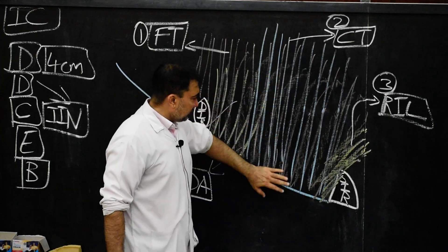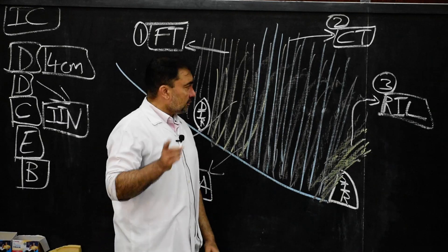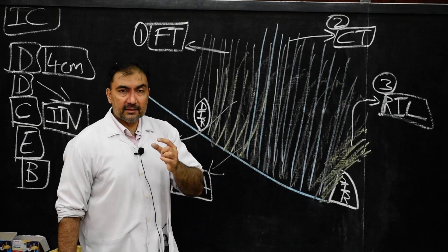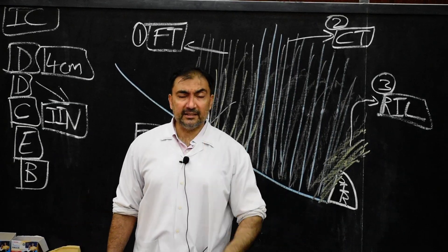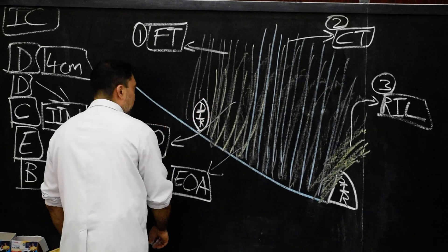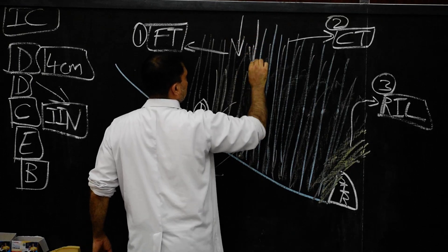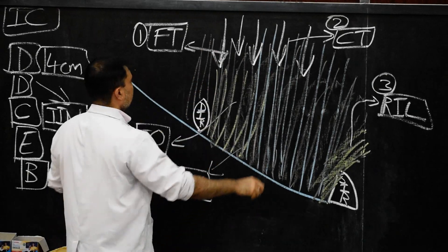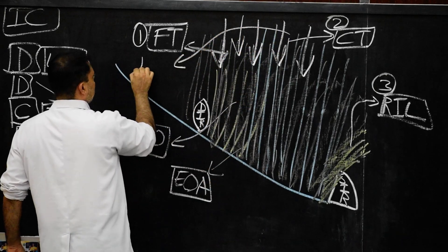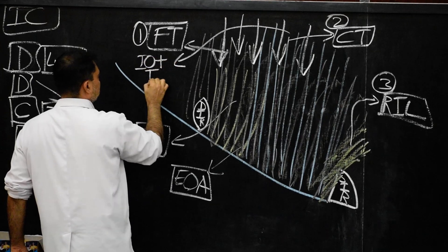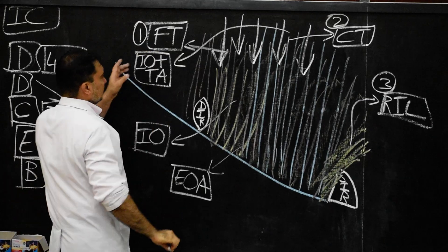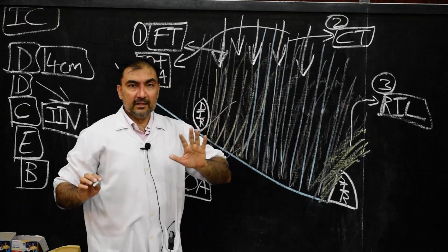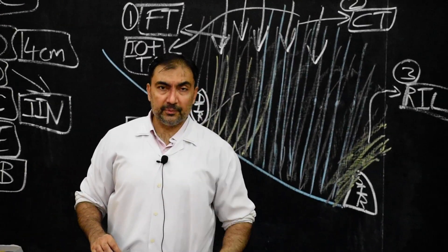Since we have completed anterior wall and posterior wall, now the roof. The roof of the inguinal canal will be formed by the fibers of internal oblique and transversus abdominis muscle. In the roof, we can show vertical arrows, and these represent internal oblique plus transversus abdominis muscle. Together, these form the roof of the inguinal canal.